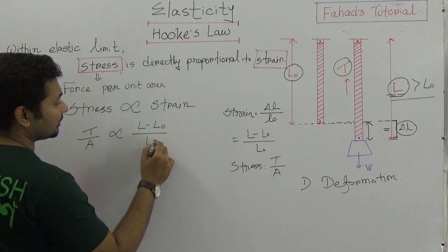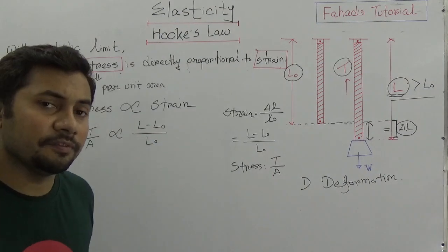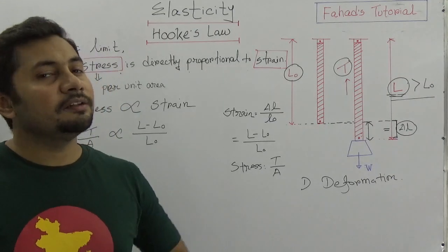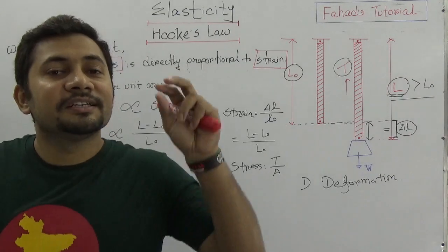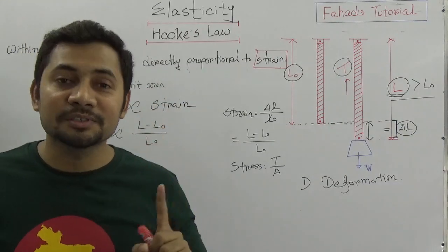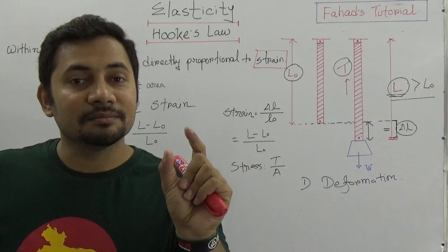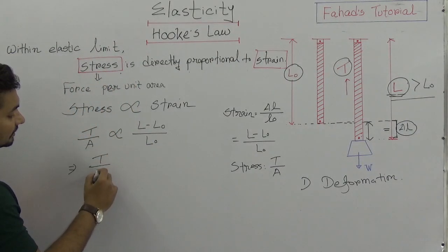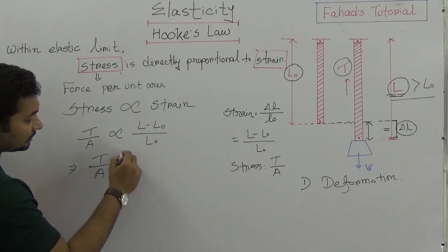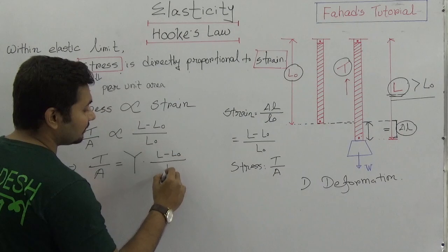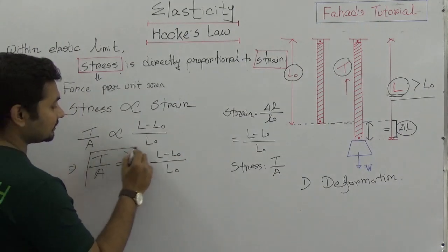Now you think that in physics when you have the relationship between two quantities and if you want to make an equation, we need to put a constant. And in these cases, in case of Hooke's law, the constant is Young's modulus. And that's why we'll write this T upon A is equal to Y times L minus L naught by L naught. And this is an equation.